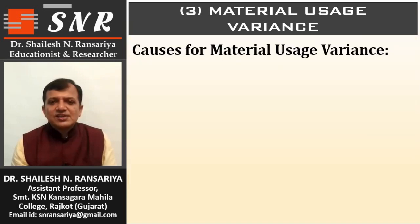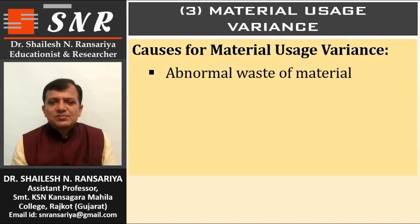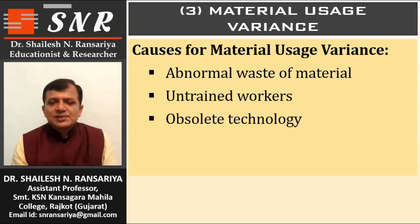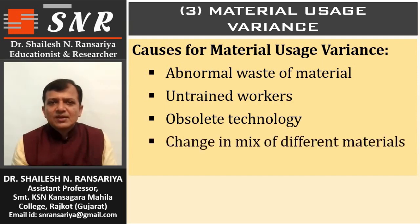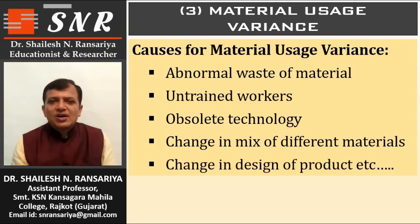Causes for Material Usage Variance include: abnormal waste of material, meaning actual loss is more than normal loss; untrained workers; obsolete technology, meaning outdated technology leading to more waste of raw material; change in the mix of different materials, meaning any change in the ratio of raw material mix may cause more usage; and change in the design of the product.